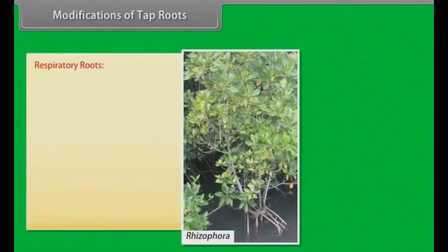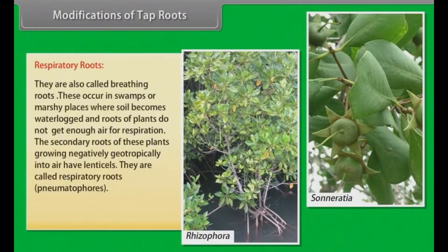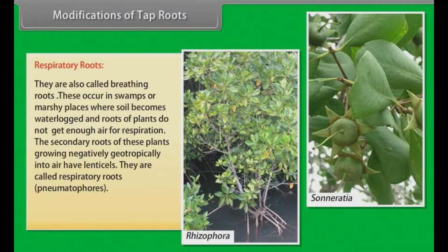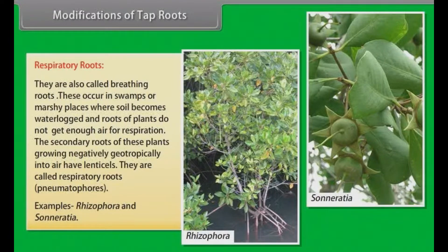Respiratory roots: They are also called breathing roots. These occur in swamps or marshy places where soil becomes waterlogged and roots of plants do not get enough air for respiration. The secondary roots of these plants grow negatively geotropically into air and have lenticels. They are called respiratory roots or pneumatophores. Examples: Rhizophora and Sonneratia.